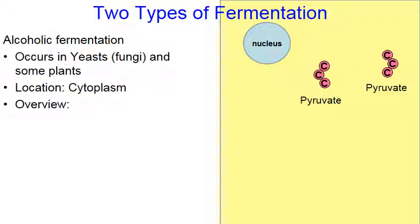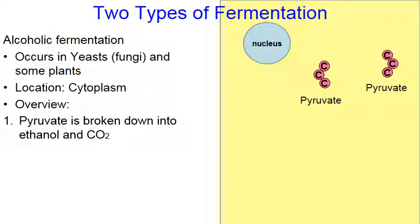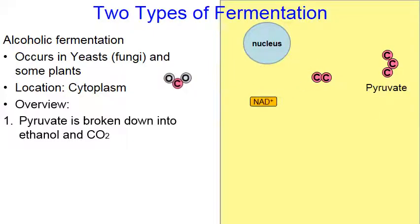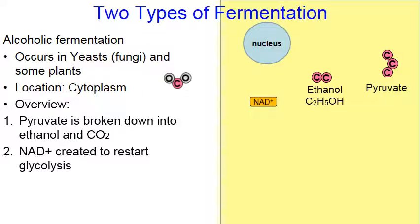Here's a couple of pyruvates — that means glycolysis must have just ended. Those pyruvates are going to be broken down into an alcohol by the name of ethanol, and some carbon dioxide will also be created. Enzymes — represented by my animated scissors — break down the pyruvate, producing three things: ethanol, a molecule of NAD, and carbon dioxide waste. It's that NAD that's going to allow glycolysis to restart.